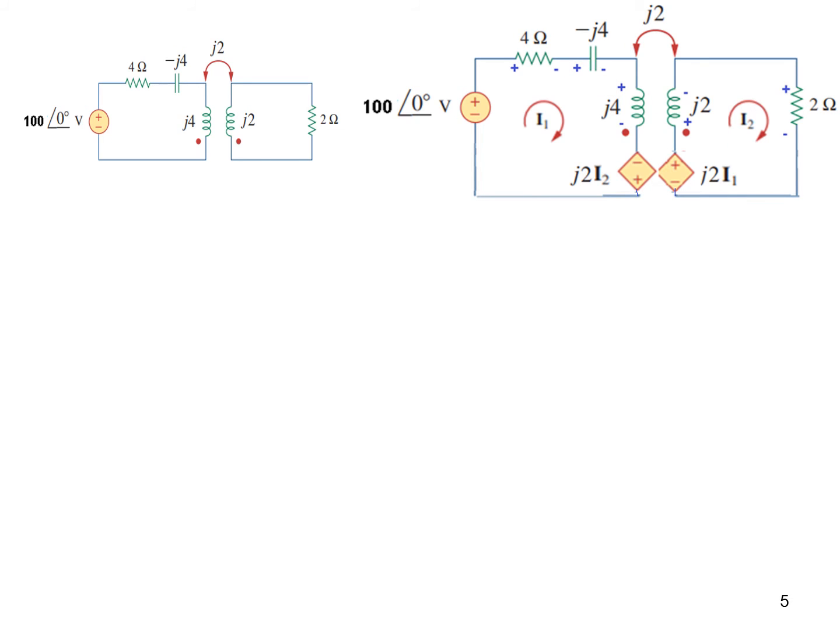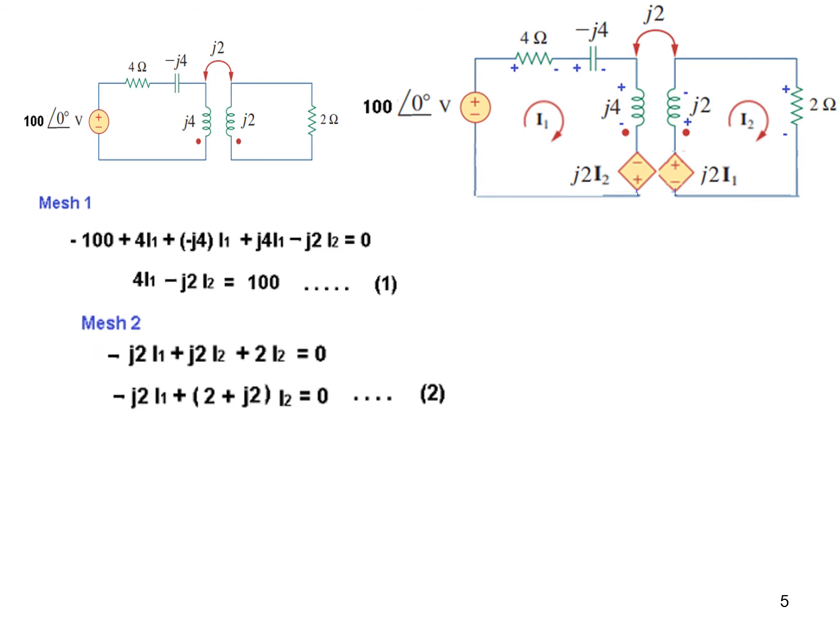And now we are ready to write the KVL equation. So for mesh 1 we start from here: minus 100, 4 I1, minus j4 I1, and this is minus sign, so we will write minus j2 I2. So this becomes our equation number 1. Similarly for mesh 2, we write from here: minus j2 I1 because minus sign comes first, then plus j2 I2, plus j2 I2, and plus 2 I2. And here also we arrange for I1 and I2. So this is our equation number 2.